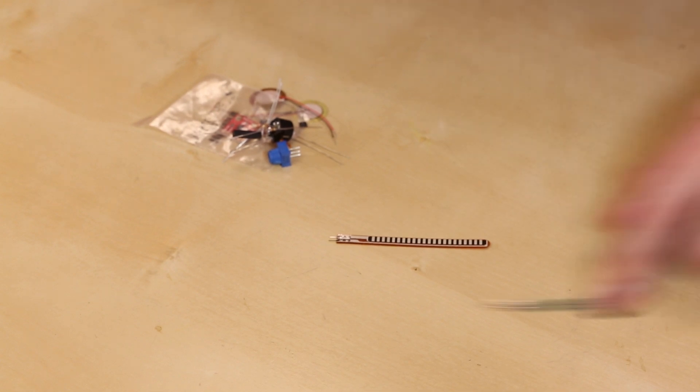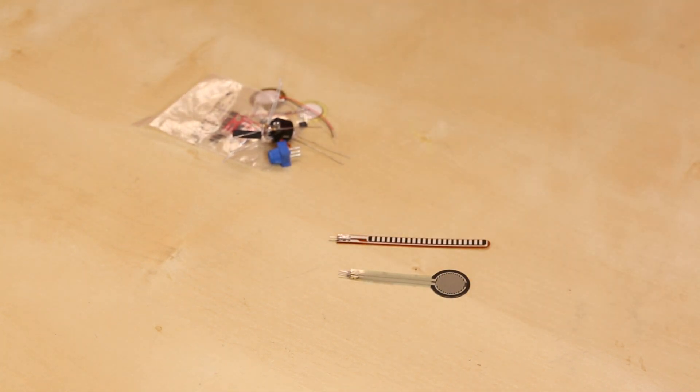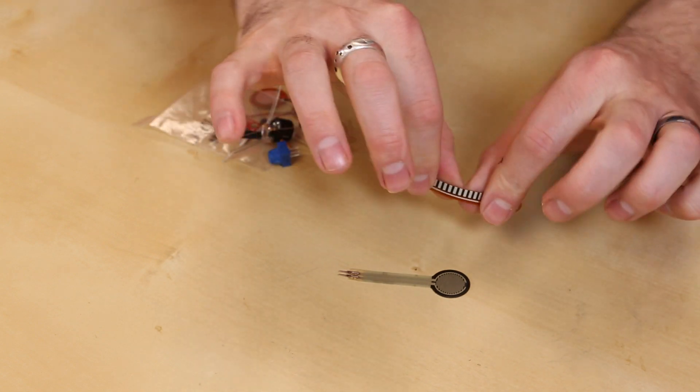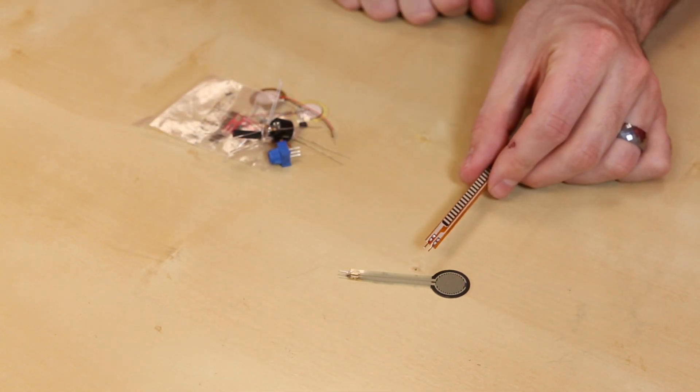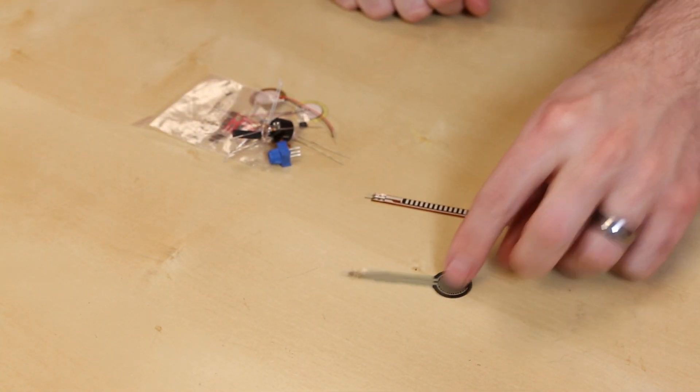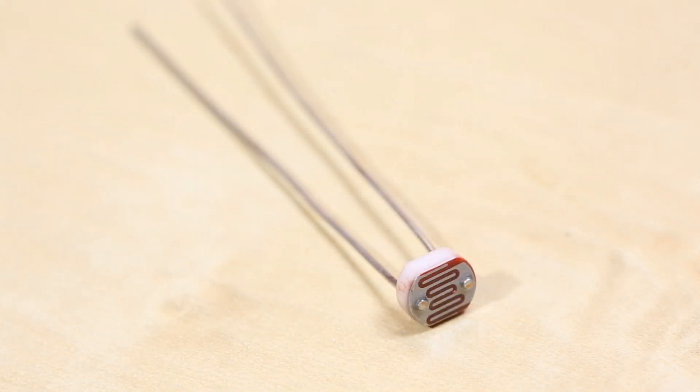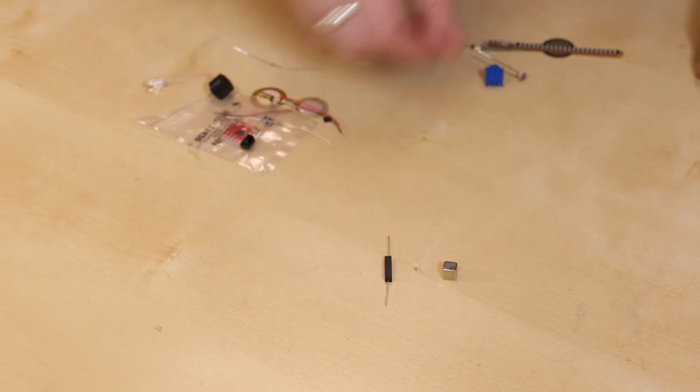First up, we've got the Flex Sensor and the Force Sensor. The Flex Sensor is basically just a resistor that when you flex it, it has a different resistance value on the end. This is very similar—when you add pressure, it changes the resistance value. We have the classic trim pot that goes into a breadboard, the photoresistor, a magnet, and a reed switch.